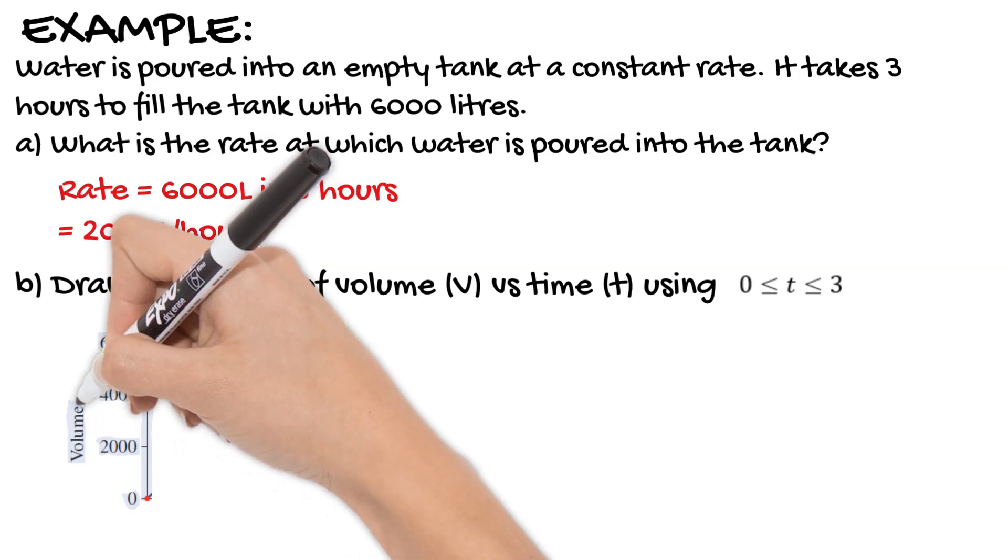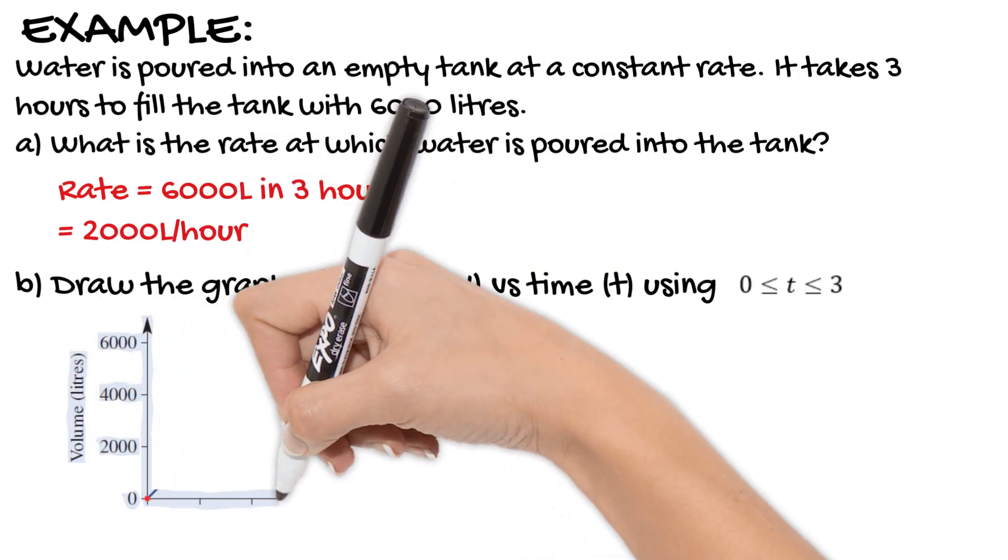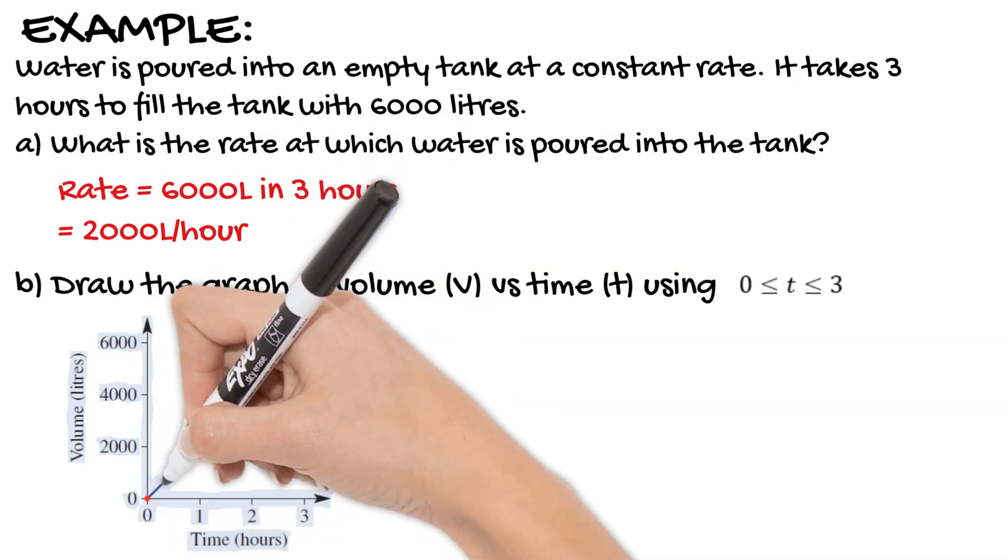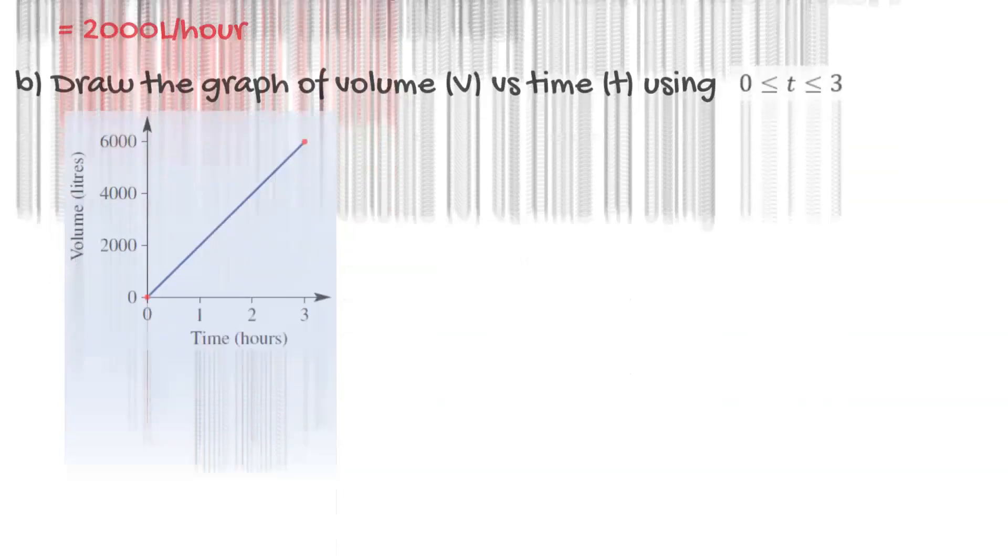So you simply draw a point at three, 6,000, and you can join that to the origin, and that's your graph drawn.